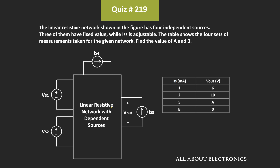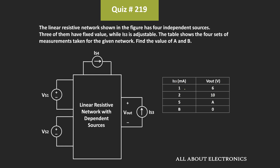Now, out of the four sources, VS1, VS2, and IS4 are the independent sources, while this current source IS3 is the variable. Apart from that, we have also been given a table which contains the different values of IS3 and correspondingly the total output voltage of this resistive network. Some of the values are missing and we have been asked to find those values.